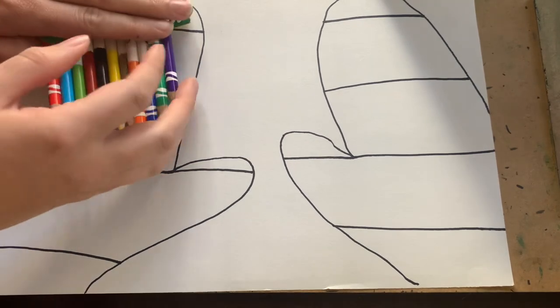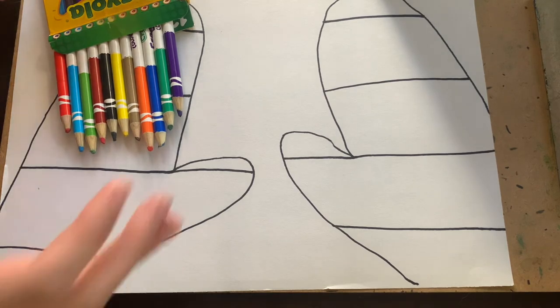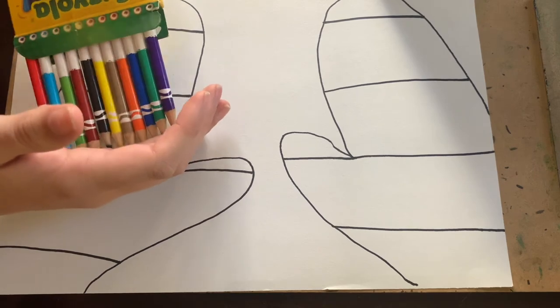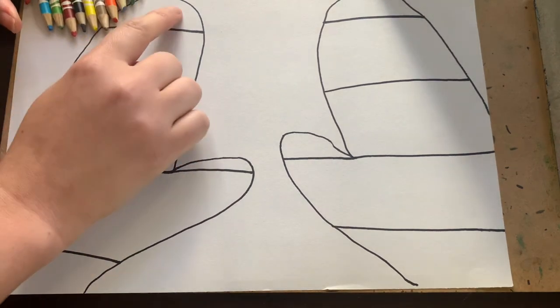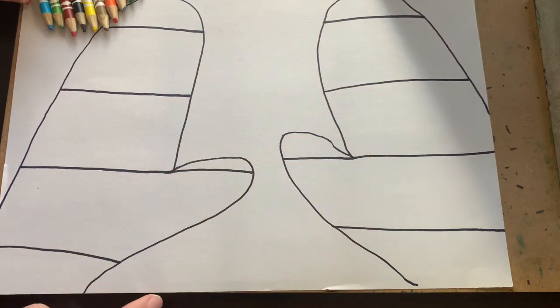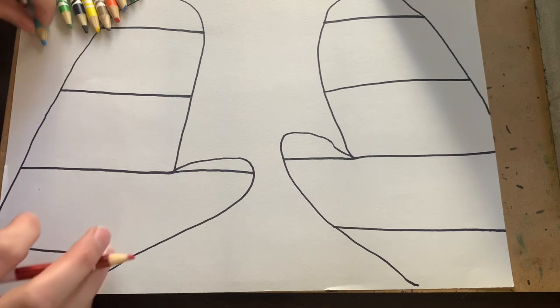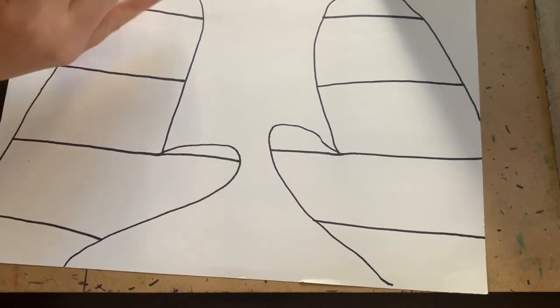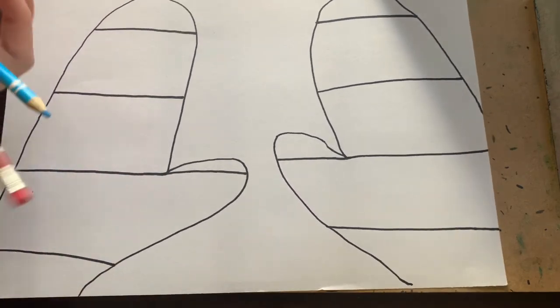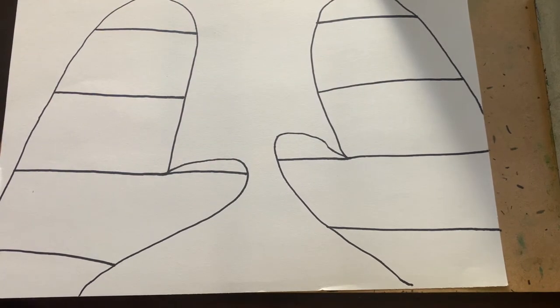Such as one, two, one, two, one, two, or letters, A, B, A, B, A, B. There are all different types of patterns. Today, we're going to be drawing different types of patterns inside of each section to create our mittens. Now, you are welcome to go ahead and come up with your own patterns to color in your mittens, but make sure that you're coloring neatly or staying inside the lines.